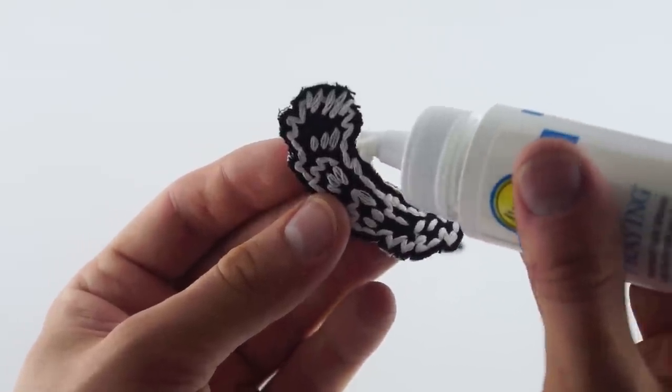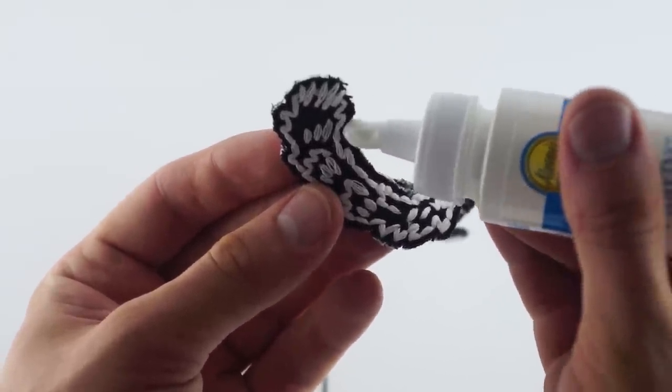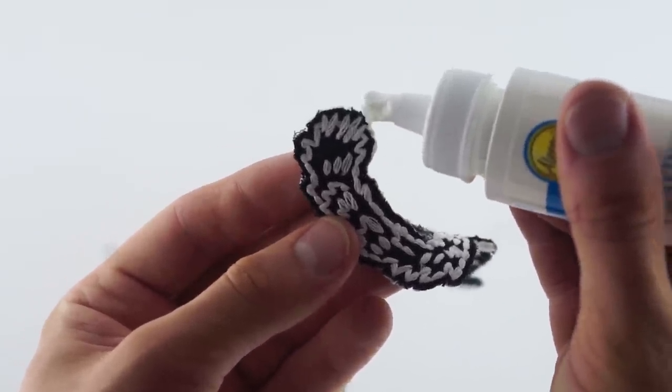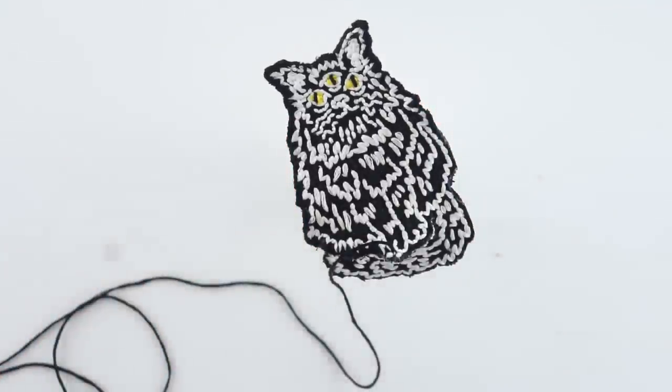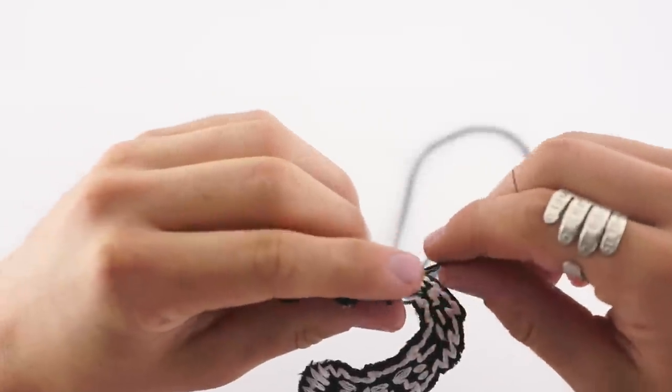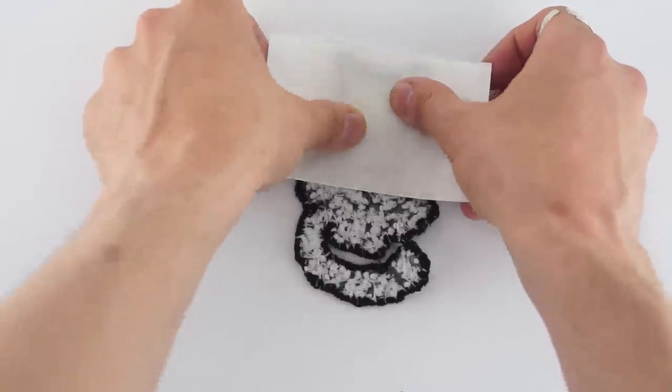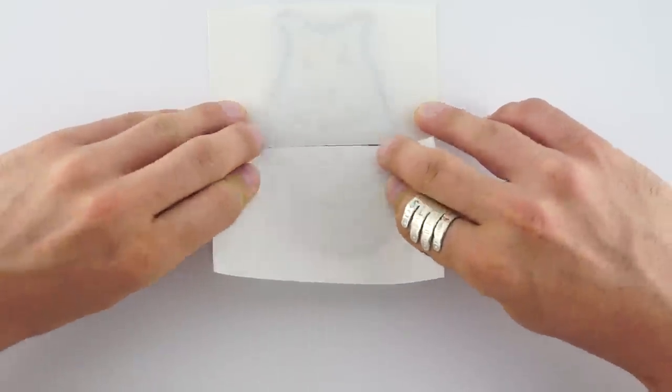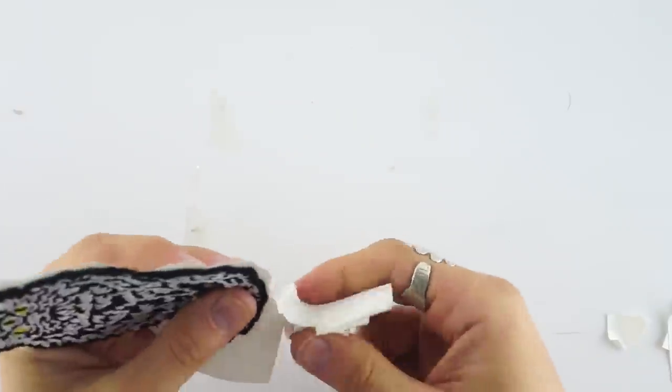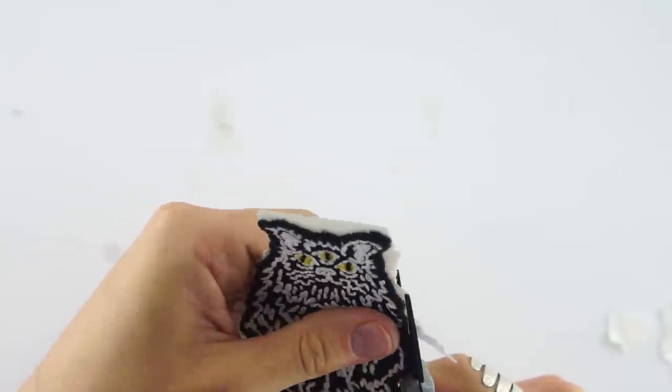One thing I was having trouble with is the thread kept on pulling through and fraying. So I took some fabric glue and let it dry. Once it was dry, I was able to make the border no problem and add that peel and stick adhesive stuff, and we're good to go.